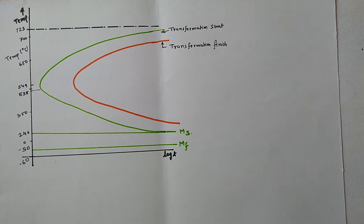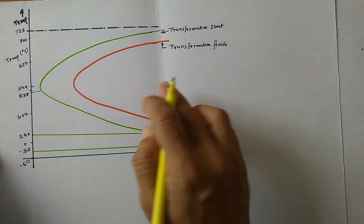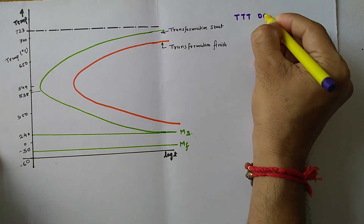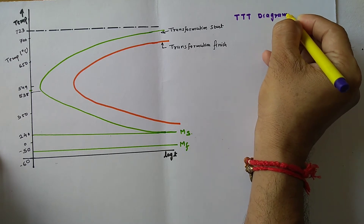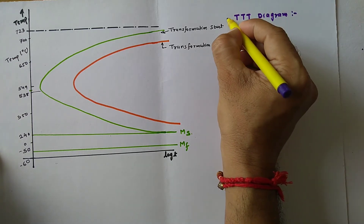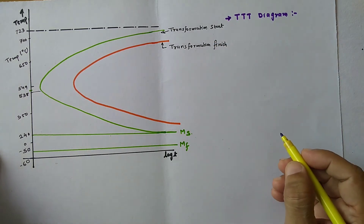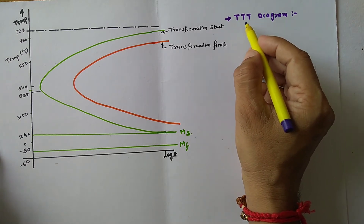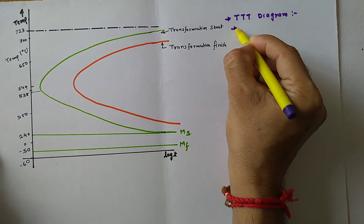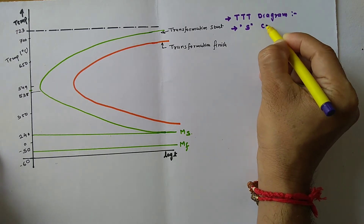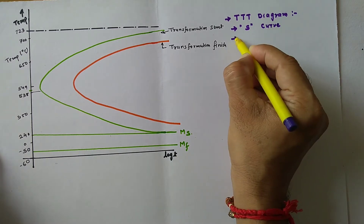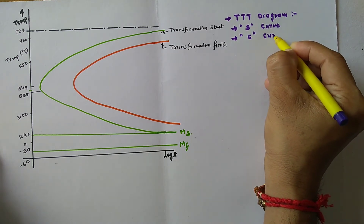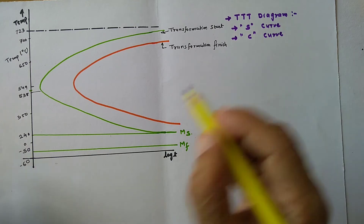Today we will discuss about the TTT Diagram. In the previous lectures, we had discussed about the introduction of TTT Diagram, that is called Time-Temperature Transformation Diagram. It is also known as S-Curve as well as C-Curve, because of the shape of the curve. So it is known as TTT Diagram, S-Curve or C-Curve.